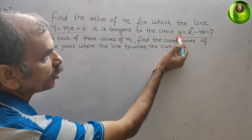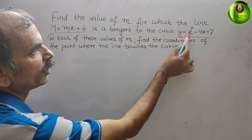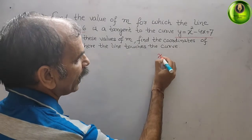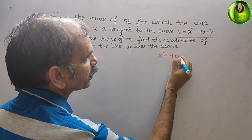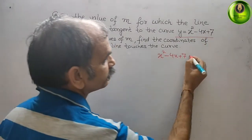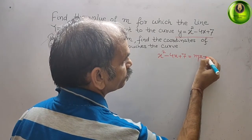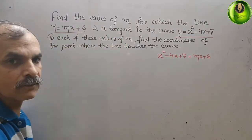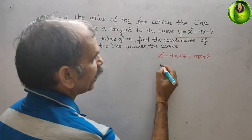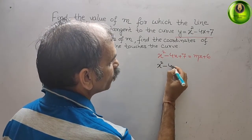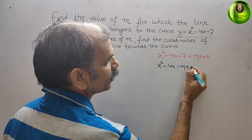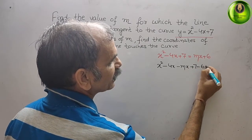Since both expressions equal y, we set them equal to each other: x² - 4x + 7 = mx + 6. Bringing everything to the left side gives: x² - 4x - mx + 7 - 6 = 0.